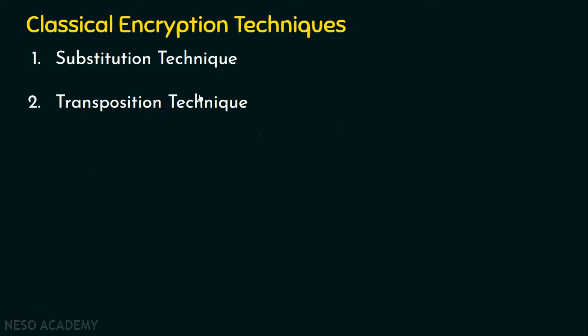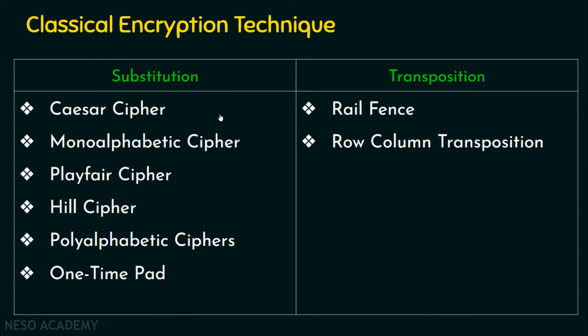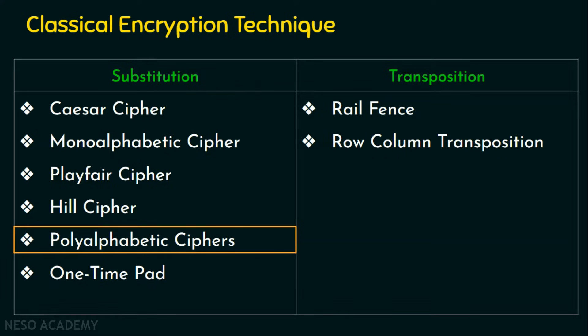We know we have two techniques under classical encryption: number one, the substitution technique, and number two, the transposition technique. We are now in the substitution technique, focusing on polyalphabetic ciphers. In the last lecture we saw the Vigenère cipher, which is also a polyalphabetic cipher. In this presentation we are going to focus on the Vernam cipher.